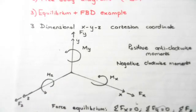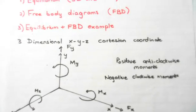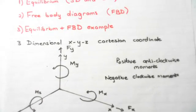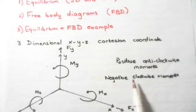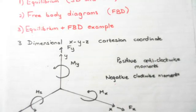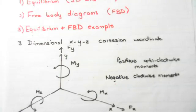In this course, the notation is: positive moments are anti-clockwise, negative moments are clockwise. So if you see a twisting or moment force that is anti-clockwise, it's taken as positive. If it is clockwise, you take it as negative.